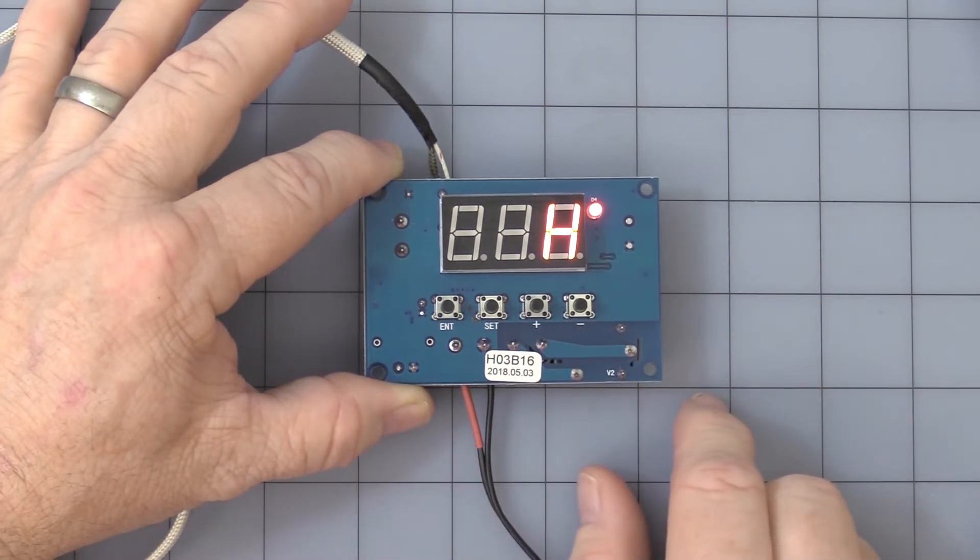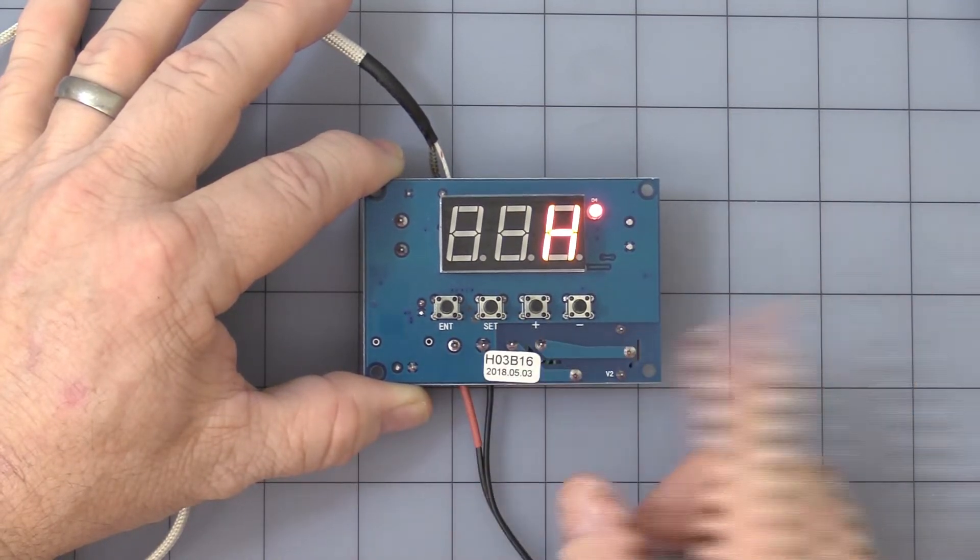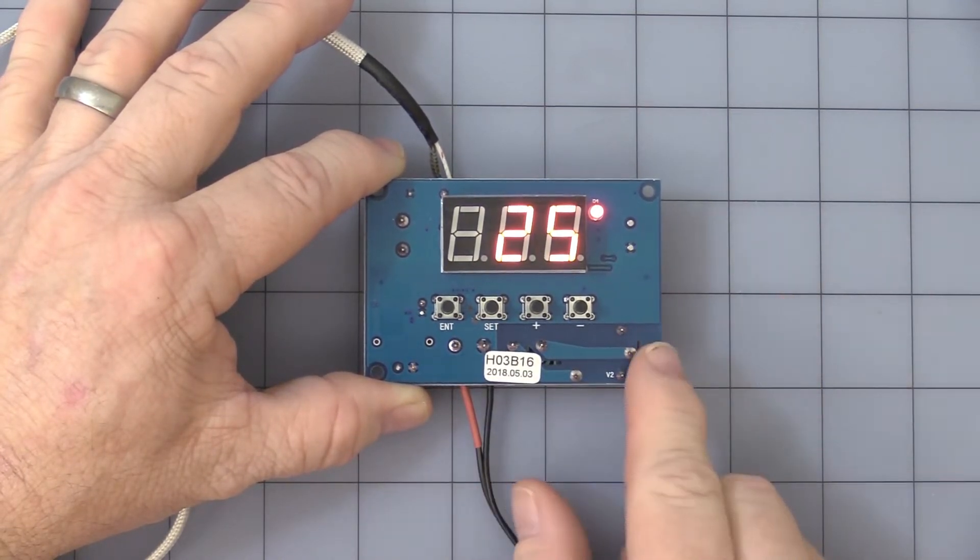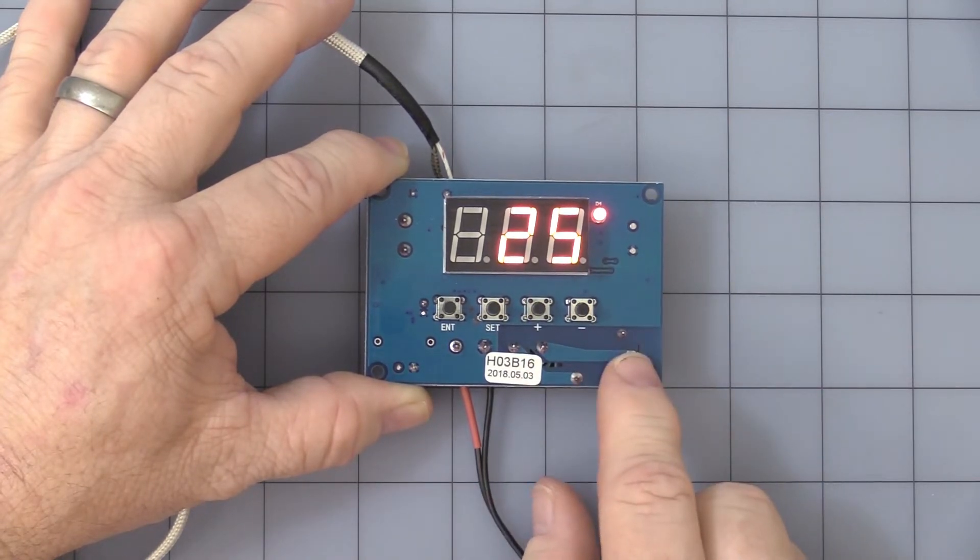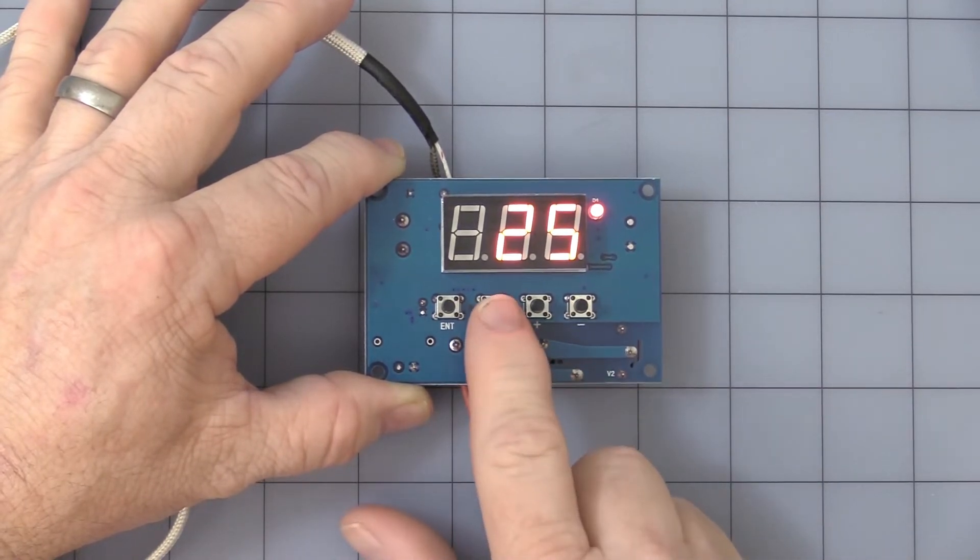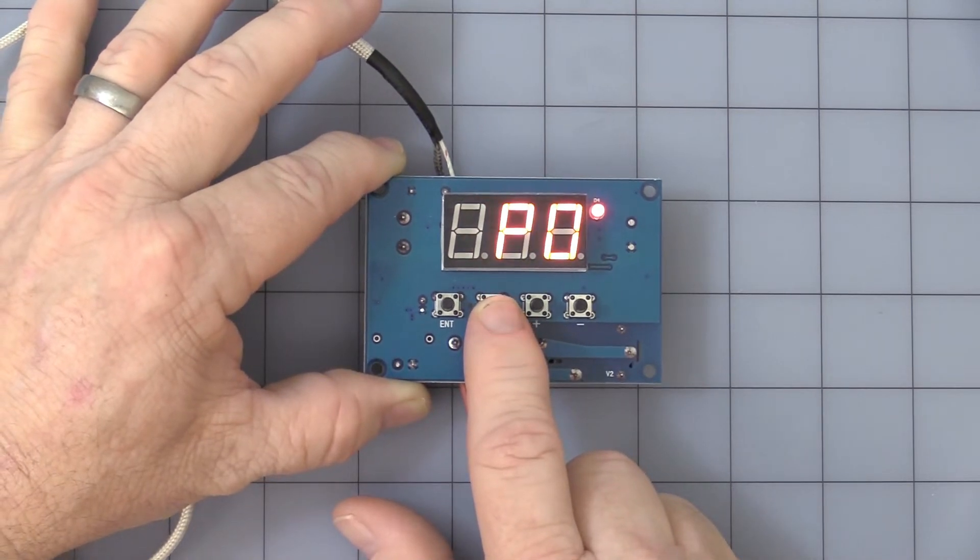We'll start off with the heating mode. You can simply leave it alone for a few seconds, and it goes back to operation mode showing the ambient air temperature. Let's see what else we got. Press and hold the set button. That's P0.